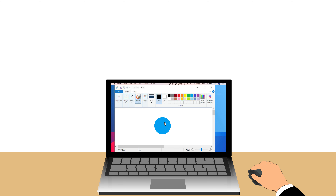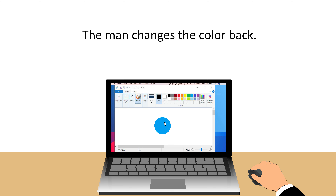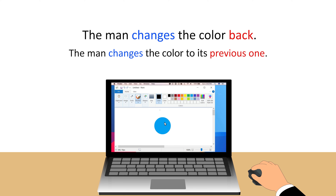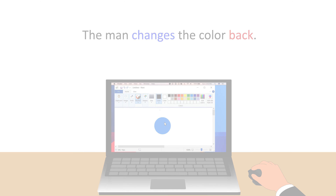Okay, let's try one more. How do you think we could describe this? Here, the man changes the color, and then changes it to its previous color. So we can say, the man changes the color back. Changes means change, and back means previous, or previous color. So the sentence just means, the man changes the color to its previous one.